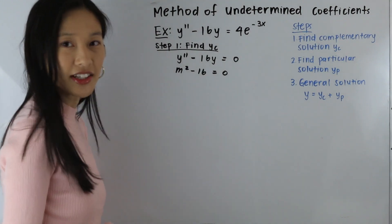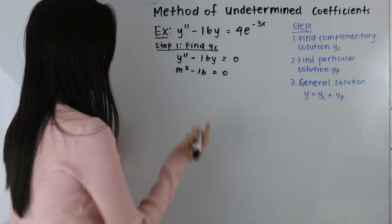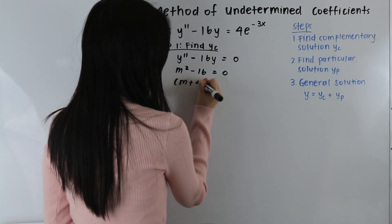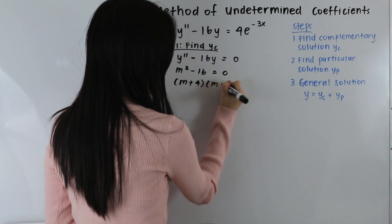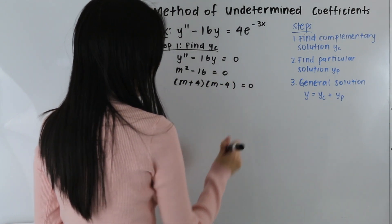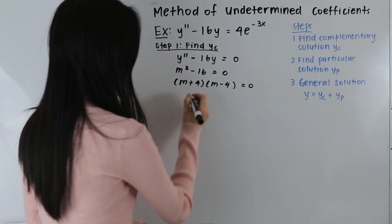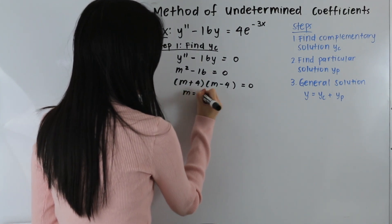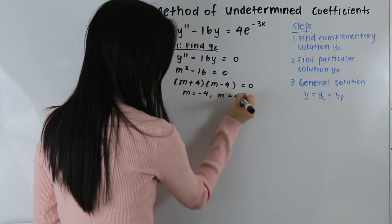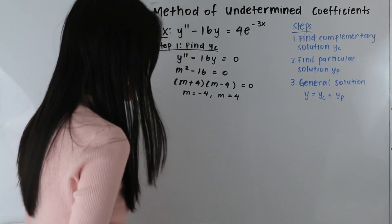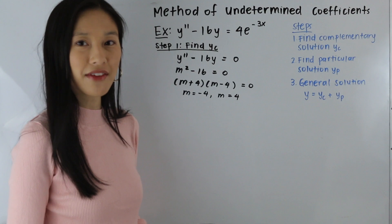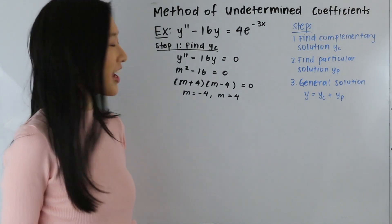Now we want to factor this. It factors out to be m plus 4 times m minus 4 is equal to 0. Solving for our roots, we have m is equal to negative 4 and m is equal to 4. So in this case we have two real and distinct roots.